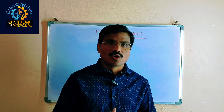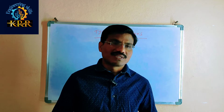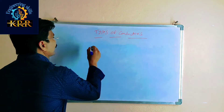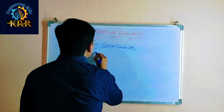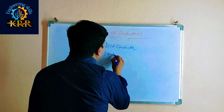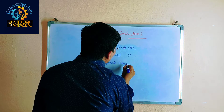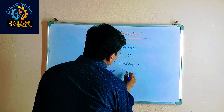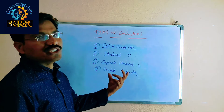Today we are discussing the concept of different types of conductors available in overhead transmission and distribution systems. The four types of conductors are: first, the solid conductor; second, the stranded conductor; third, the composite stranded conductor; and fourth, the bundled conductor. We will explain each one by one.